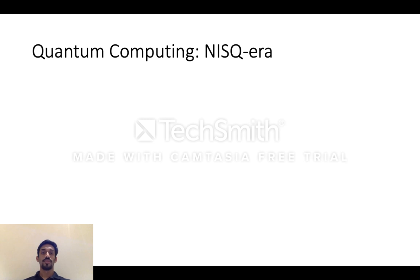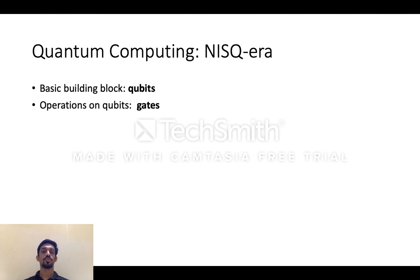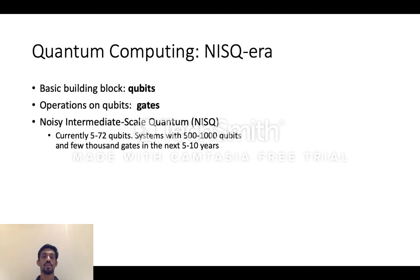Quantum computers are composed of a set of quantum bits called qubits, and the operations we can do on these qubits are called gates. Currently the quantum systems that we can build are small in size — they have 5 to 72 qubits — and the gates that we can apply on these qubits are error-prone. So we call these systems NISQ, which stands for Noisy Intermediate Scale Quantum.